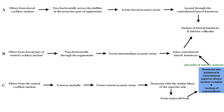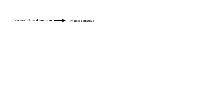Some fibers from the ventral cochlear nucleus ascend uninterrupted and join the lateral lemniscus. The lateral lemniscus is composed of fibers from both second-order and third-order sensory neurons. From the nucleus of the lateral lemniscus, fibers project into the inferior colliculus, which acts as a sorting station of the auditory pathway.